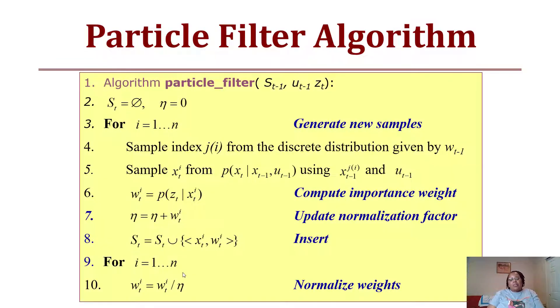Here's what this algorithm would look like in pseudocode. You have a particle filter which has a set and a normalization. As you iterate through the samples, you sample index j of i from the discrete distribution given by a weight. Based upon that state, you find the probability of that state given the previous state and the motion model. Based upon the sensor readings from that state, you compute the importance weight, update your normalization factor, insert that into your set of particles, and at the very end normalize them by the weight.